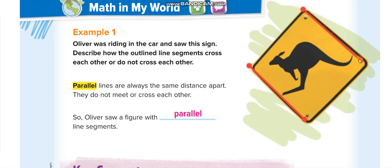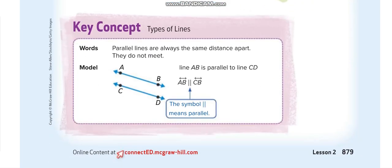Parallel lines are always the same distance apart at any point. They do not meet or cross each other — they will never meet and never cross. How do we represent them? This is line AB (small line symbol with two arrows, A and B) and this is line CD. The symbol with two small lines means parallel. So we say: line AB is parallel to line CD.